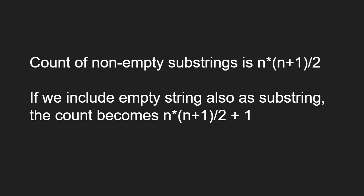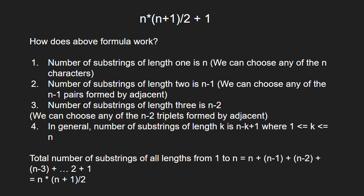Now let us see how we came up with this formula. Number of substrings of length 1 is n. Number of substrings of length 2 is n-1. Number of substrings of length 3 is n-2.